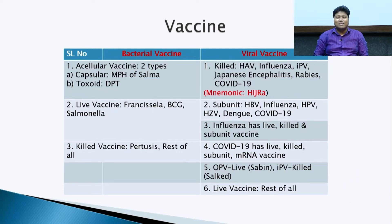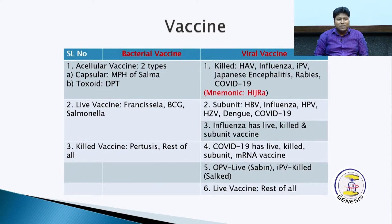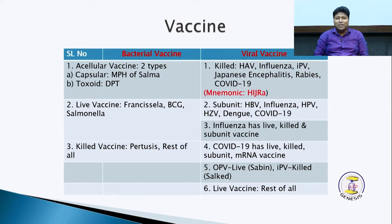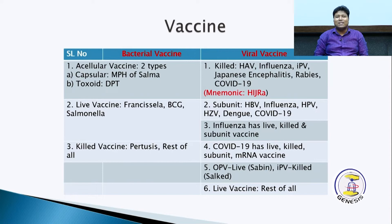Salmonella is an example of a live vaccine. Toxoid vaccine includes DPT: diphtheria, pertussis, and tetanus. Pertussis is a killed vaccine. We need to know the bacteria in order to understand the bacterial vaccine.